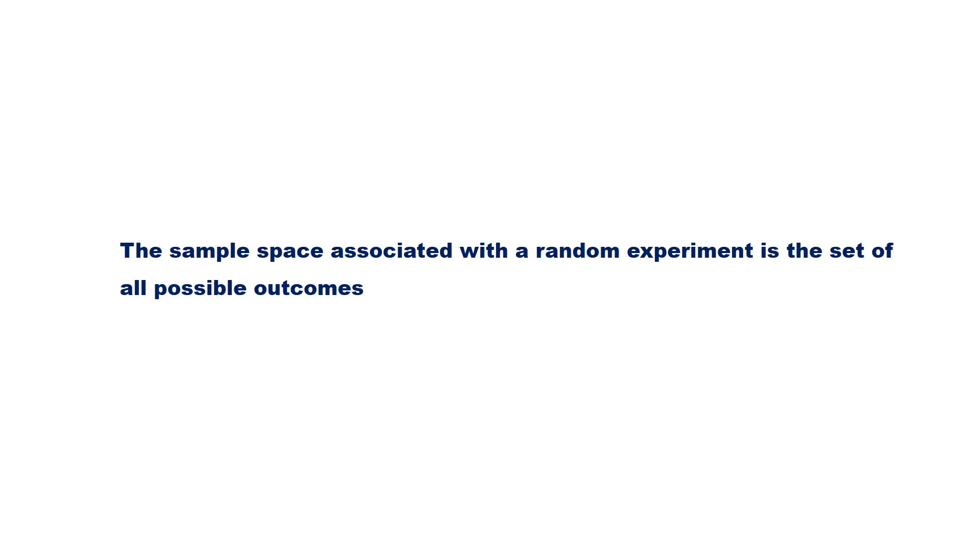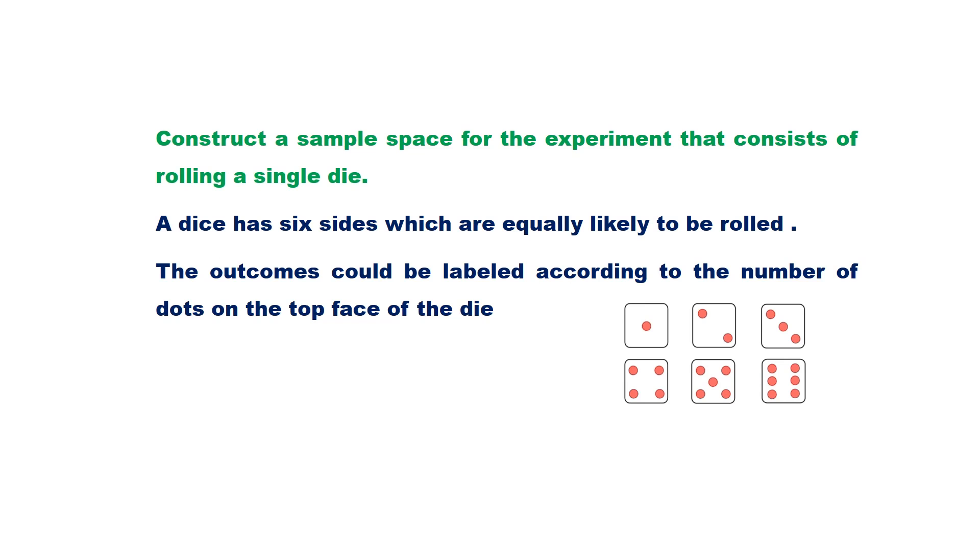Sample space is a set of all possible outcomes. In rolling a dice, there are 6 possible outcomes. Hence, the sample space is the set {1, 2, 3, 4, 5, 6}.